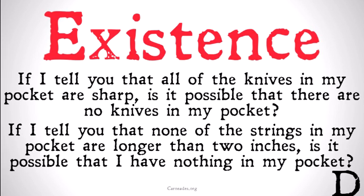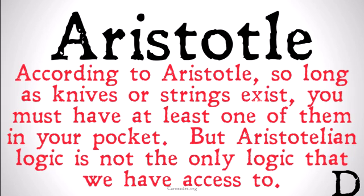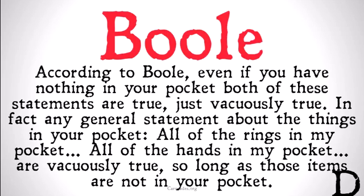These are interesting questions, and they express a key difference between two different schools of categorical logic. According to Aristotle, so long as knives and strings are the kind of things that do exist, you must have at least one of them in your pocket to be telling the truth. But Aristotelian logic is not the only logic we have access to. According to Boolean logic, even if you have nothing in your pocket, both of these statements are going to be true — they're just vacuously true.